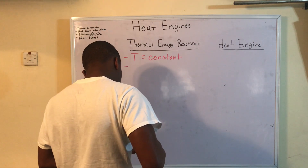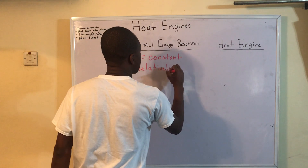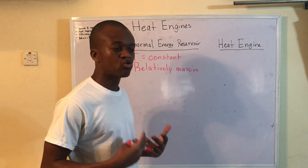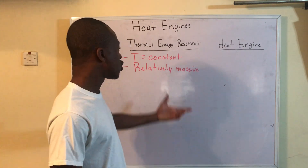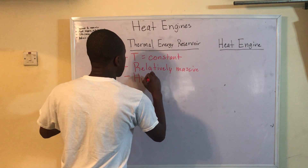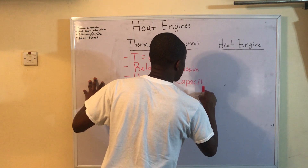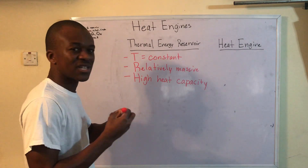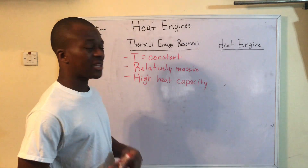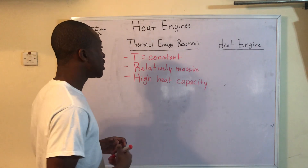Another characteristic of a reservoir is that it's relatively massive. The atmosphere is so big that no matter what's going on, the temperature isn't changing drastically — it's so relatively massive that it's unchanged. Another characteristic is that it has a high heat capacity, meaning it takes a lot of energy to change its temperature, so T basically remains the same. Some examples of a reservoir could be the ocean, the atmosphere, or even a room.